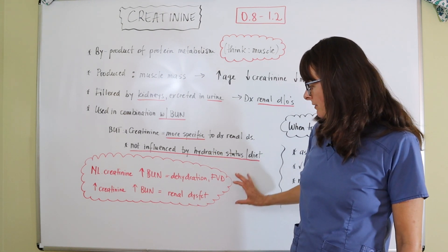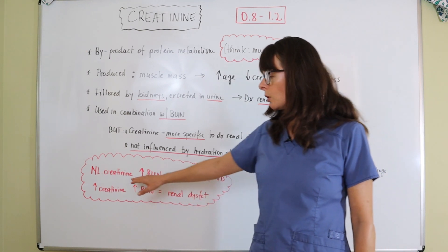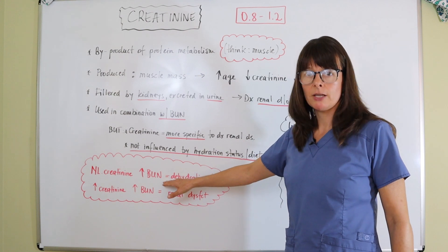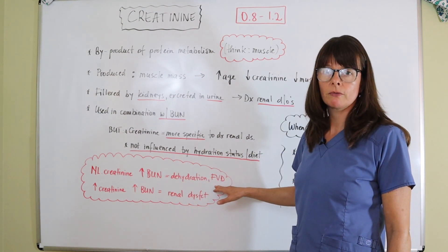Here is a very important part. If the patient has a normal creatinine level but the BUN is elevated, that usually means that we have dehydration, or what we also call fluid volume deficit.